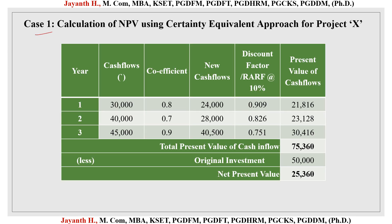Case 1 is the calculation of Net Present Value using the Certainty Equivalent Approach for project X. First we take down the years, then write down the cash flows, then write the coefficient values given in the question. We are trying to convert the cash flow into a new certain cash flow using the coefficient. So: 30,000 × 0.8 gives us 24,000; 40,000 × 0.7 gives us 28,000; 45,000 × 0.9 gives us 40,500. These are the new certain cash flows which we have found.